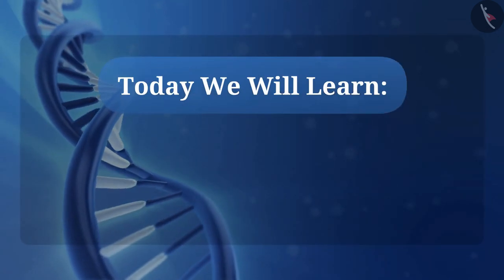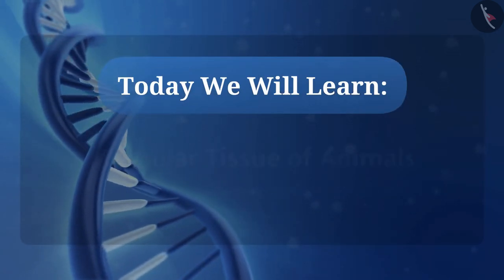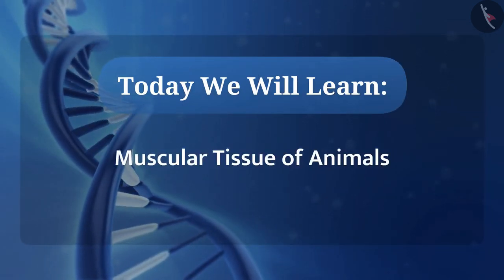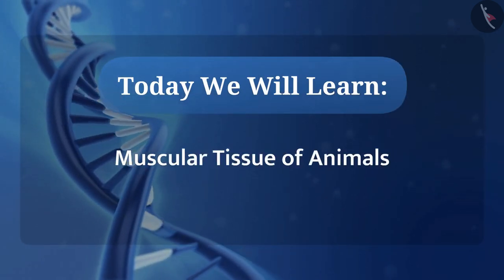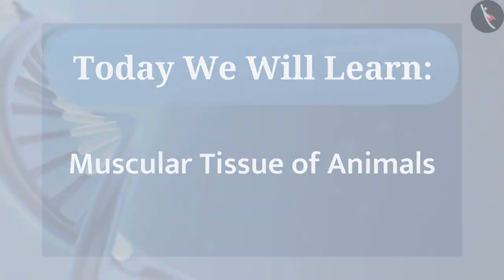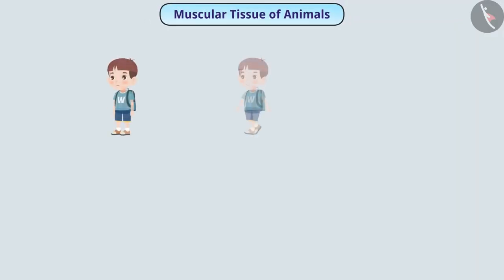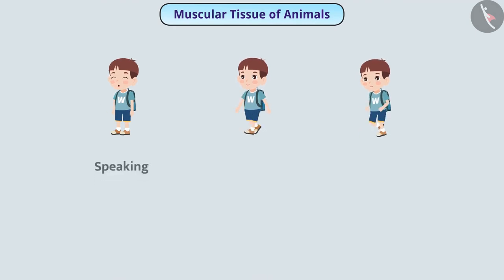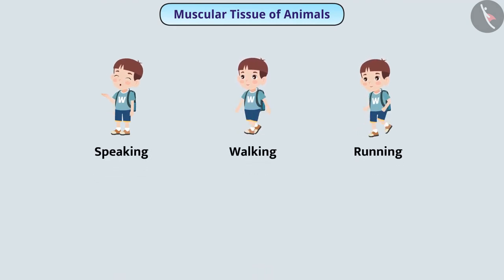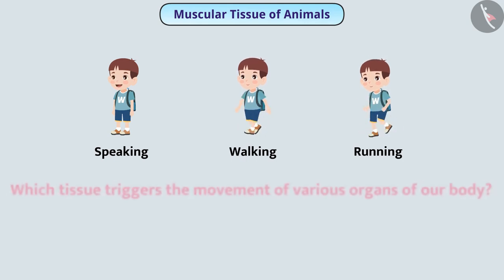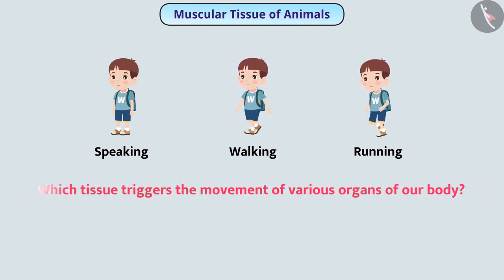Today we will learn about the muscular tissue of animals. In our daily lives, we perform different kinds of movements such as speaking, walking, running, etc. Can you tell which tissue triggers the movement of various organs of a body?